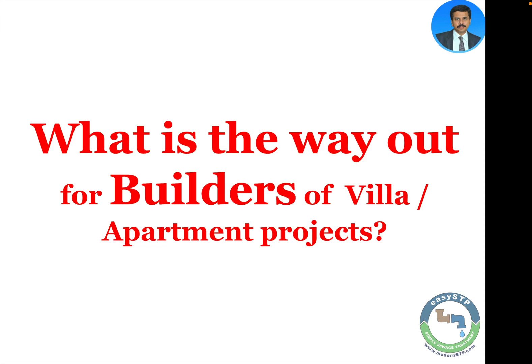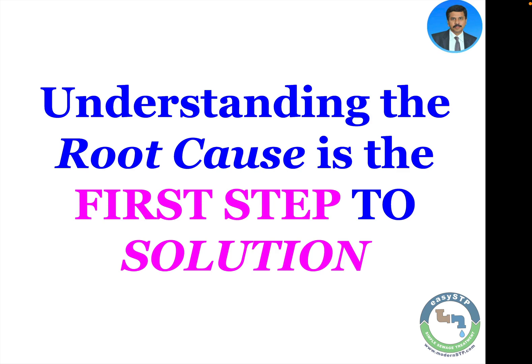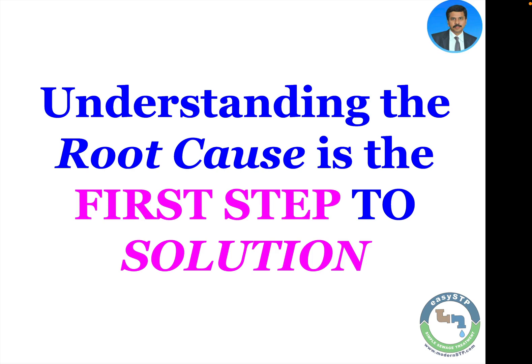What exactly is the solution? Understanding the real root cause of the problem is the first step to the solution. Let us look at why we have to install an STP. The number one reason is to meet a statutory requirement by the PCB or local municipality. The second reason is that even in villa projects in rural areas with no municipality connection, there is a smell problem, and an STP is needed to prevent it. The third and emerging reason, especially in water-starved localities like Bangalore, is reuse of water. Treated sewage is the most reliable source of water — it can be recycled and reused for any purpose, even up to drinking level.